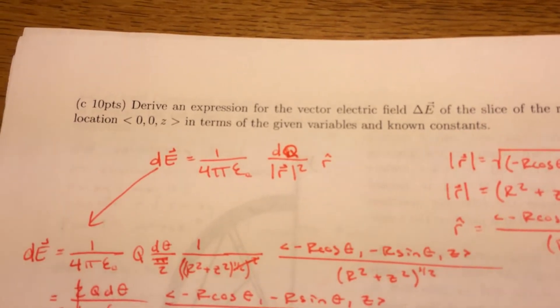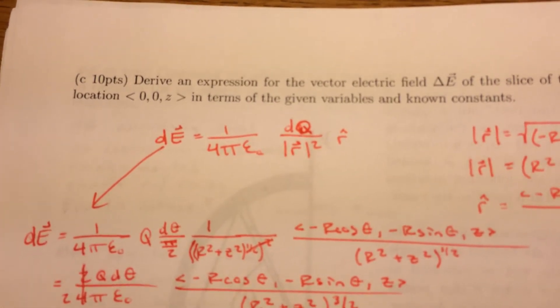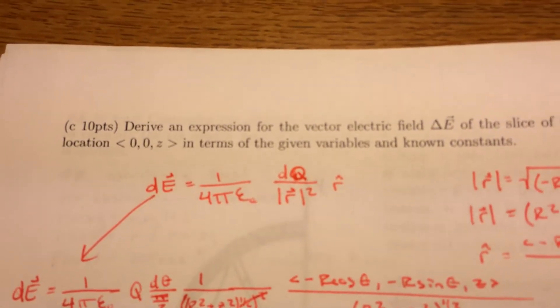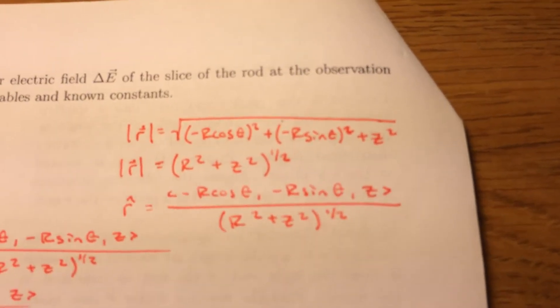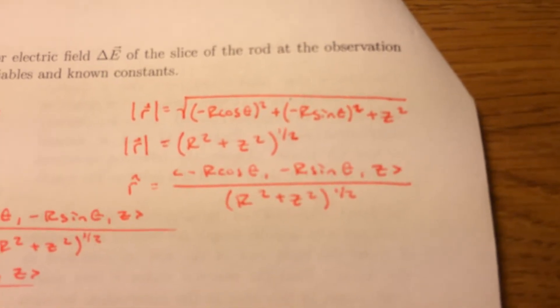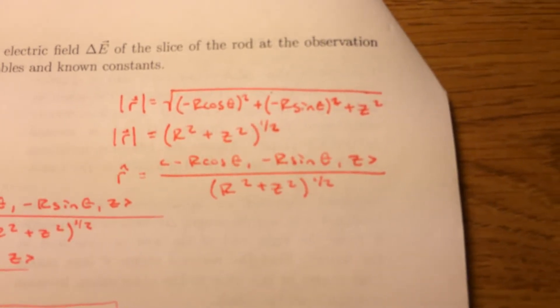We're going to break that down into a derivatable one. That's why we have a dE and a dq. We're going to find our magnitude, which is just taking the square root of all the squares of the components of r. And we're going to simplify that. Then we're going to find r hat, which is just r divided by the magnitude.